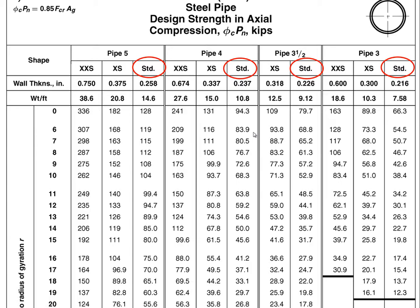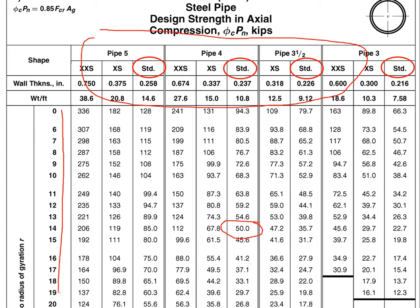Now you understand how this number was generated. The steel industry has derived these values for all pipe sizes and all effective lengths. Once you know the effective length and the required axial force, you can scan across the table to find the lightest section that supports the load needed.